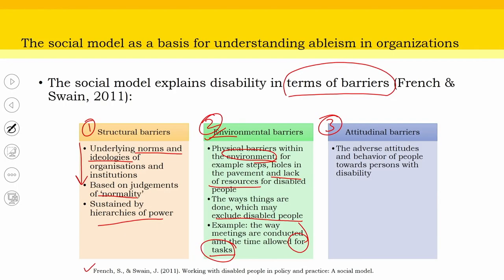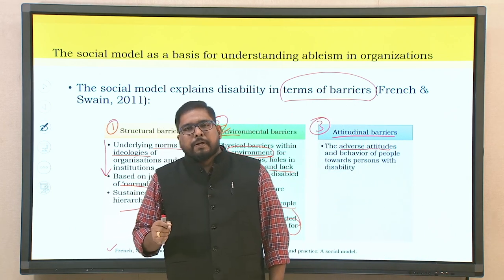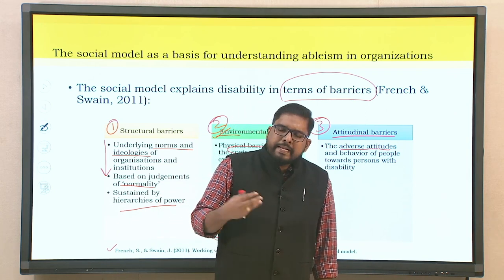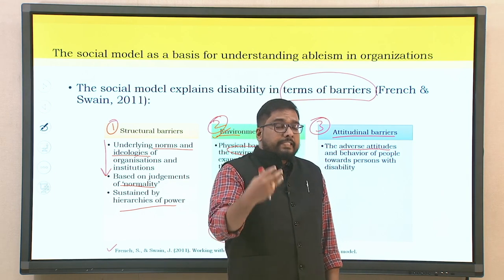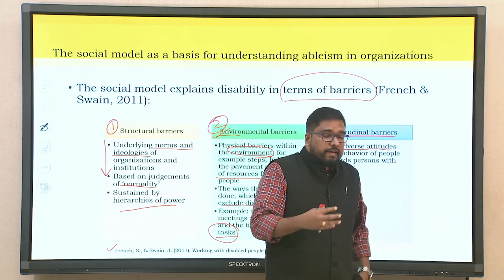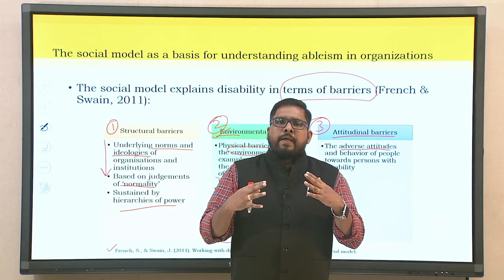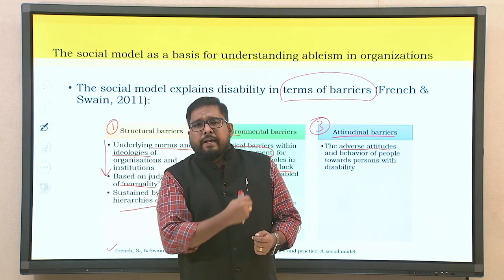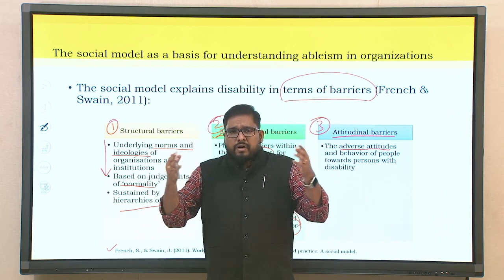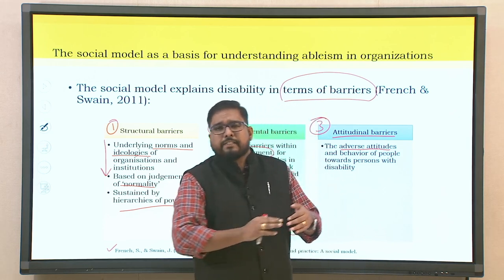The most important aspect is the third one: attitudinal barriers — the adverse attitudes and behaviors of people towards persons with disability. In the context of organizational behavior, attitudinal barriers are the most vital and critical aspect. This is the core theme of today's lecture: people in wheelchairs are not disabled by paralysis, they are disabled by lack of sensitivity, lack of ramps, and lack of accessible spaces. Similarly, blind people are not disabled by their blindness but by the lack of Braille, large-print materials, and cluttered or isolated workspaces.